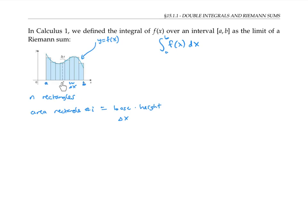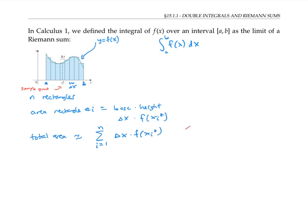To find the height, we pick a sample point. For rectangle number i, we call the sample point x sub i star — some point on the x-axis in that little sub-interval number i. We find the height of the rectangle by evaluating f at the sample point x sub i star, so the height is f of x sub i star. The total area is approximately the sum from i equals one to n of delta x times f of x sub i star. This is our Riemann sum.